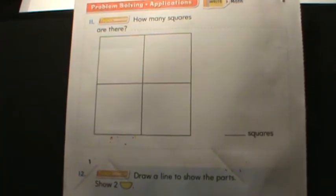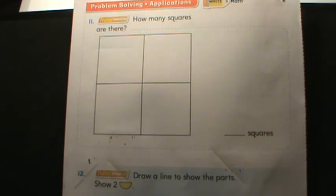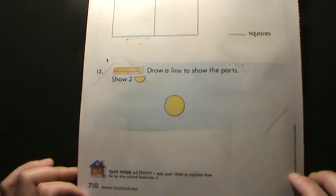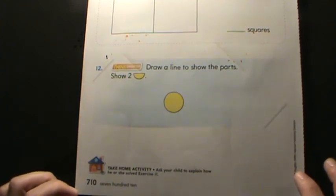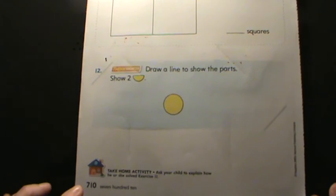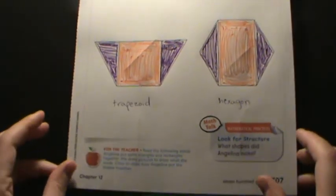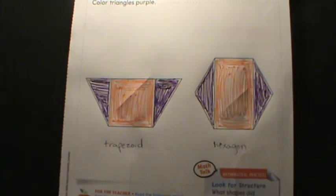And on the back, number eleven wants you to answer how many squares are there. Look at the picture and tell how many squares there are. And number twelve, draw a line to show the equal parts. Show two half circles, so draw a line there. Parents, I will put the answer key on ClassDojo. If you need any other help with this lesson today, do not hesitate to reach out and let me know.